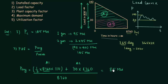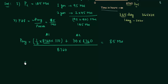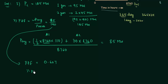The average power is 85 megawatt and the maximum power is 140. So the plant load factor = 85 / 140 = 0.607, and the percentage plant load factor is 60.7%.